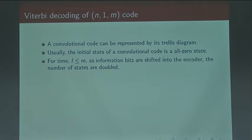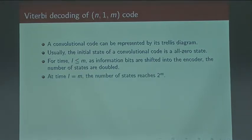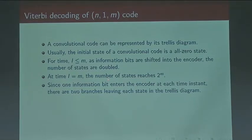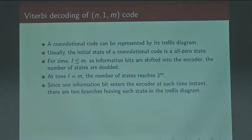As we start through the trellis, each information bit doubles the number of states up until time M. Once we get to time M, we've got 2^M states. One information bit enters the encoder at each time unit, so there are two branches leaving each state. This is why it's more difficult to use the Viterbi algorithm and the BCJR algorithm with high-rate convolutional encoders. For example, if you wanted to use rate 8/9, at each time instance there are eight information bits coming in, so there'd be 256 branches leaving each state in the trellis, which increases the trellis complexity.